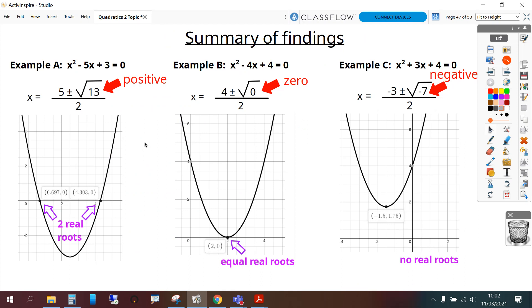So there's the summary of what we've just found out. When this number underneath the square root is positive we get two real roots. When it's 0 we get equal real roots. And when it's negative we get no real roots.